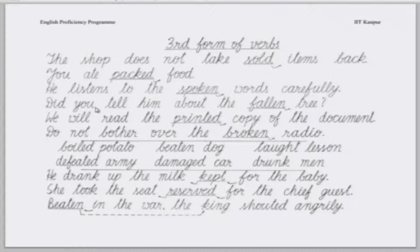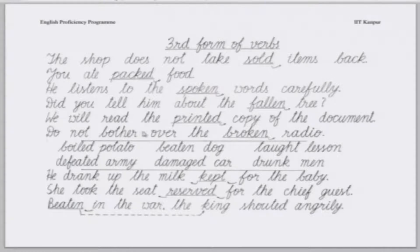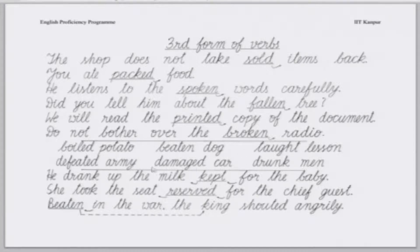Similarly: we will read the printed copy of the document, not the handwritten one. Do not bother over the broken radio. You can also make sentences with: boiled potato, beaten dog, taught lesson, drunk man, damaged car, defeated army, and so on. All these adjectives — boiled, beaten, taught, drunk, damaged, defeated — are actually the third forms of verbs, which come in the third column of our list.